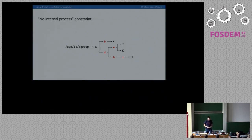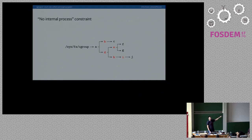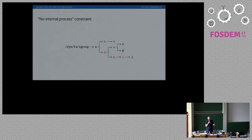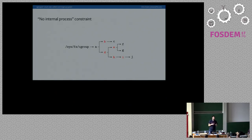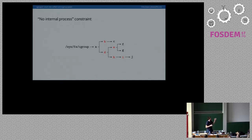Another new feature in V2 is the no internal process constraint. This means cgroups with processes and controllers enabled cannot create child cgroups. In simpler terms, these cgroups either have to have no processes or no controllers enabled in that part of the hierarchy. In V1 this was allowed, and the problem is you end up with two different types of objects competing against each other — processes in a cgroup competing against its child cgroups — which is difficult to reason about. The better solution is just to create another cgroup, guiding people toward a saner hierarchy.